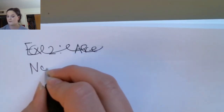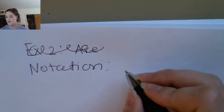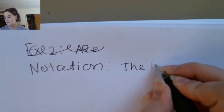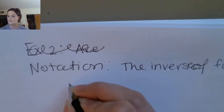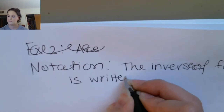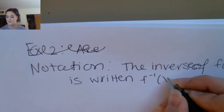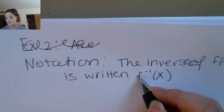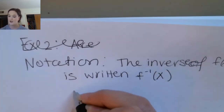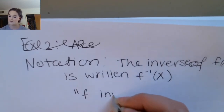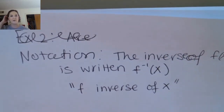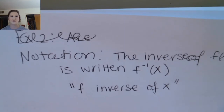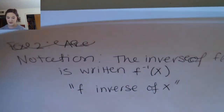Let's do some notation first. The notation looks like f⁻¹(x), with a minus one — you say this as 'f inverse of x.' I'll remind you that this minus one is not an exponent; it doesn't have anything to do with exponents, fractions, or negative numbers. That's just the notation we use.